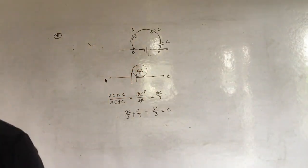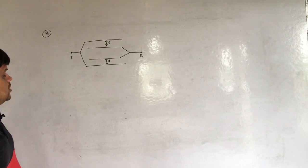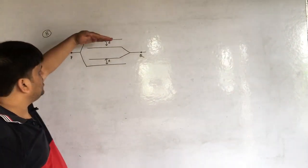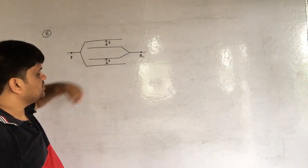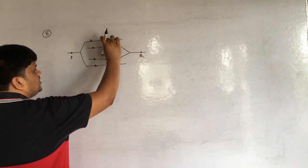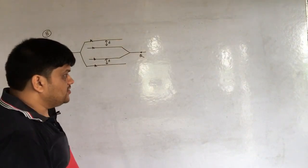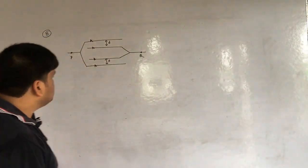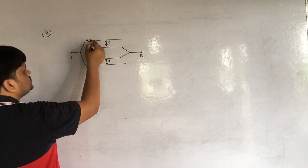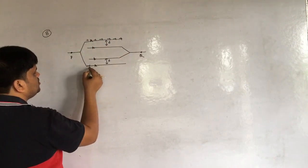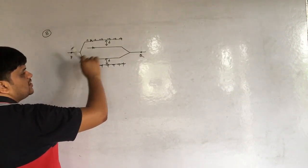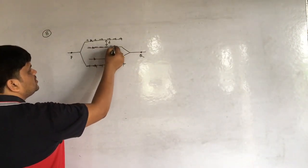Question 9: Find the net capacitance between P and Q for four parallel plates, each of area A, with separation D between adjacent plates. First identify which plates form capacitors. If this side is connected to positive, this plate gets a positive charge, and the next plate must be negative. Each adjacent pair of plates forms a capacitor.